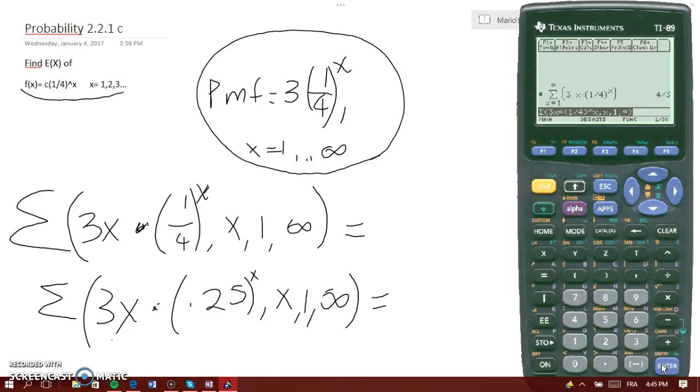And the answer would be four-thirds. But now, if you want to make it as decimal, you would change this to .25, so .25, and then click it, and you get 1.3.